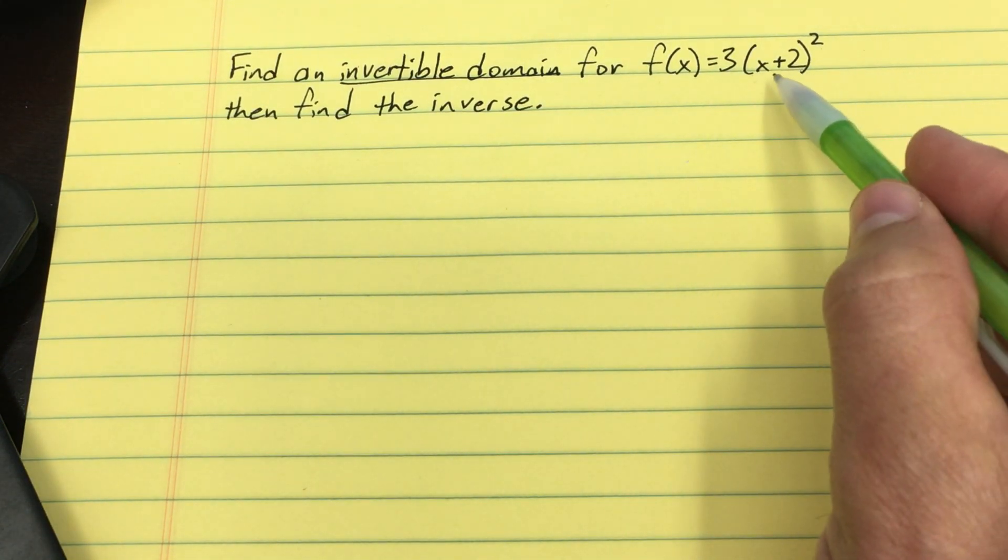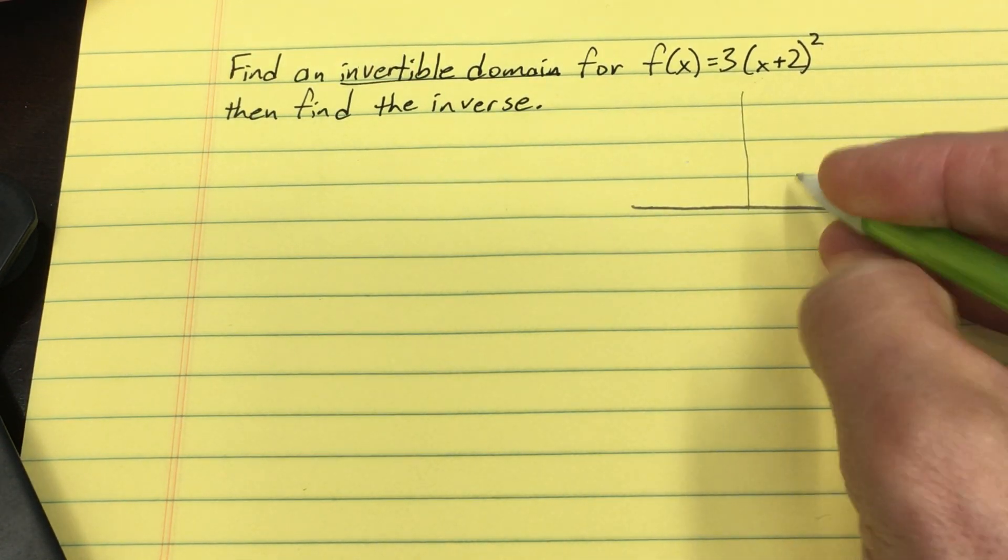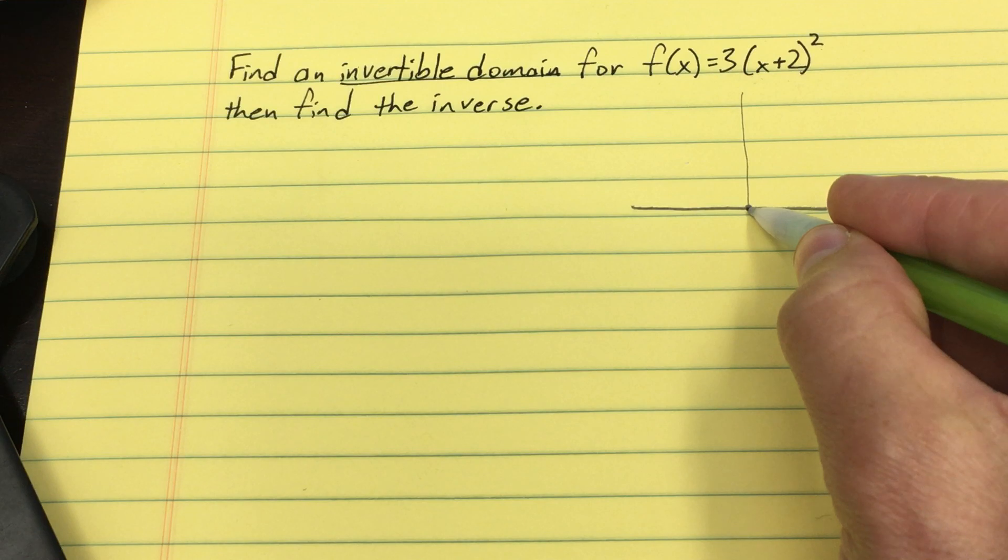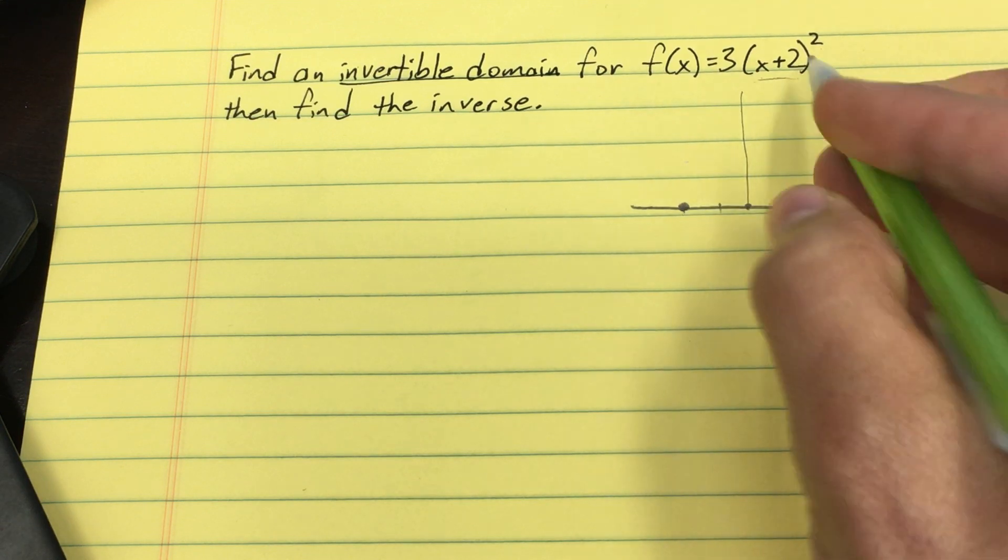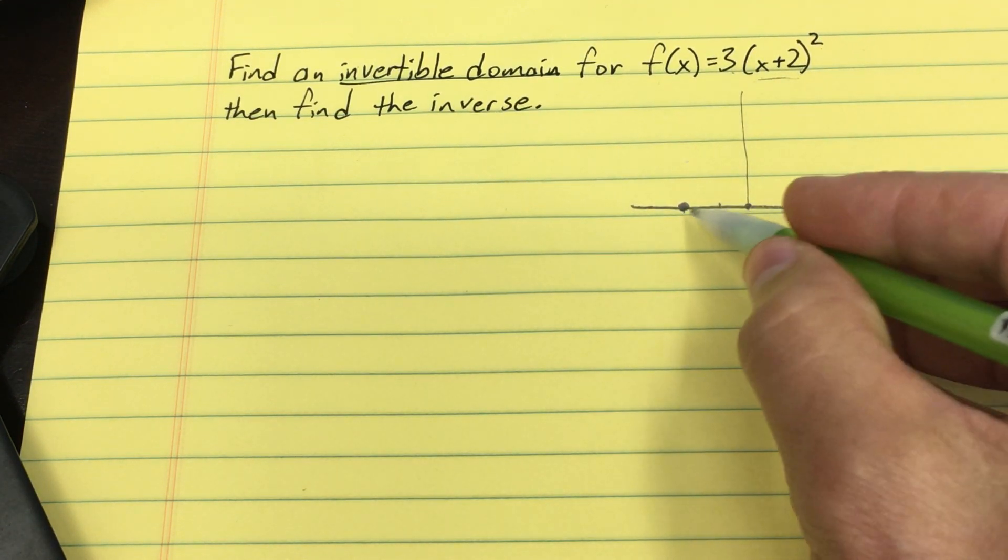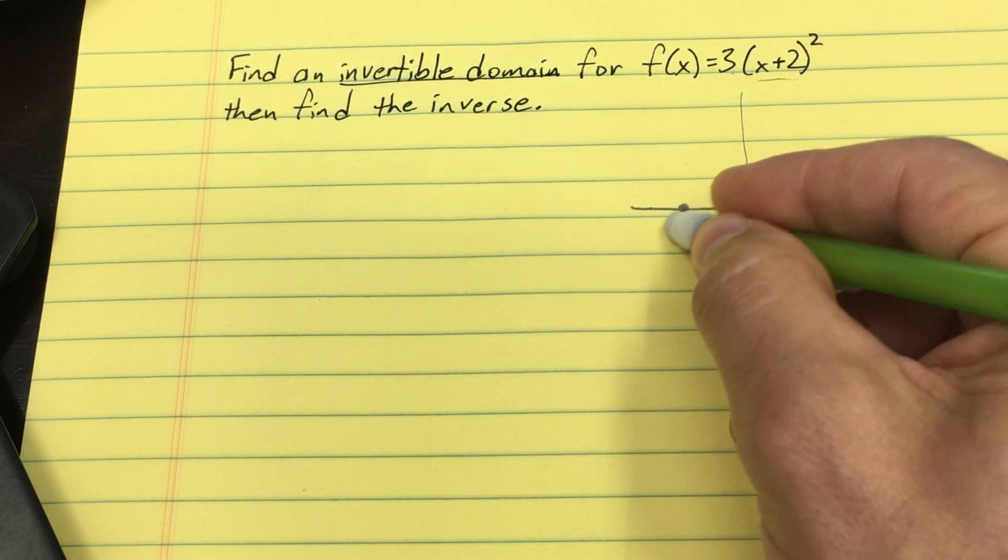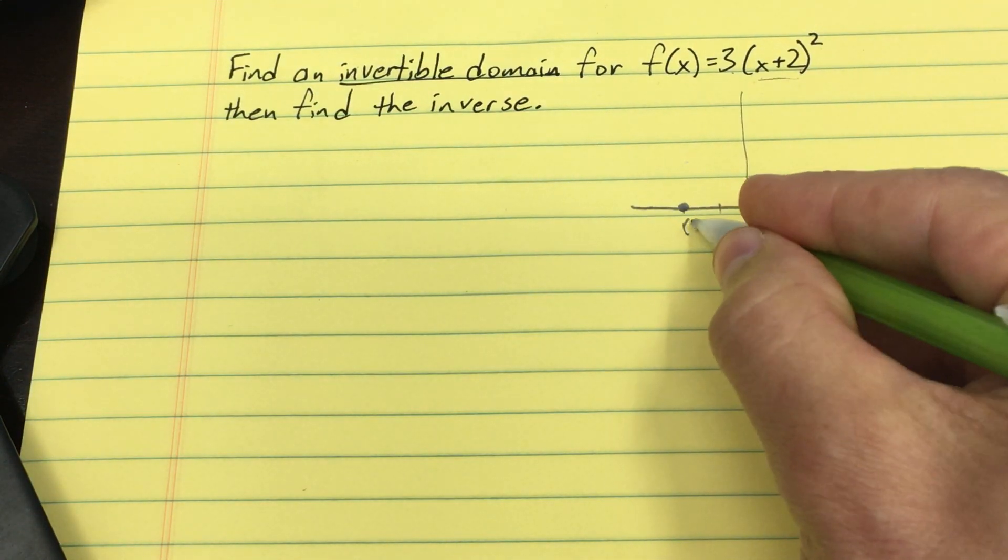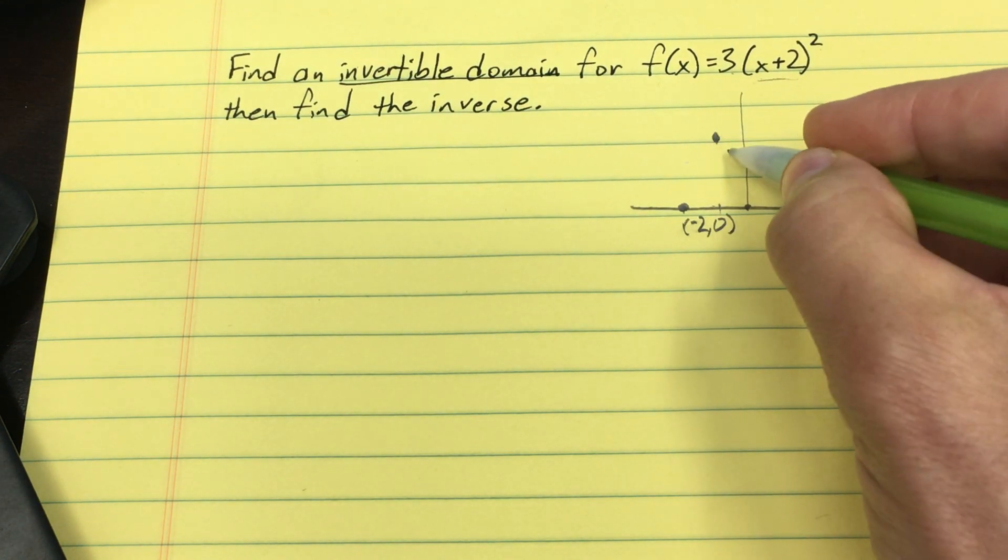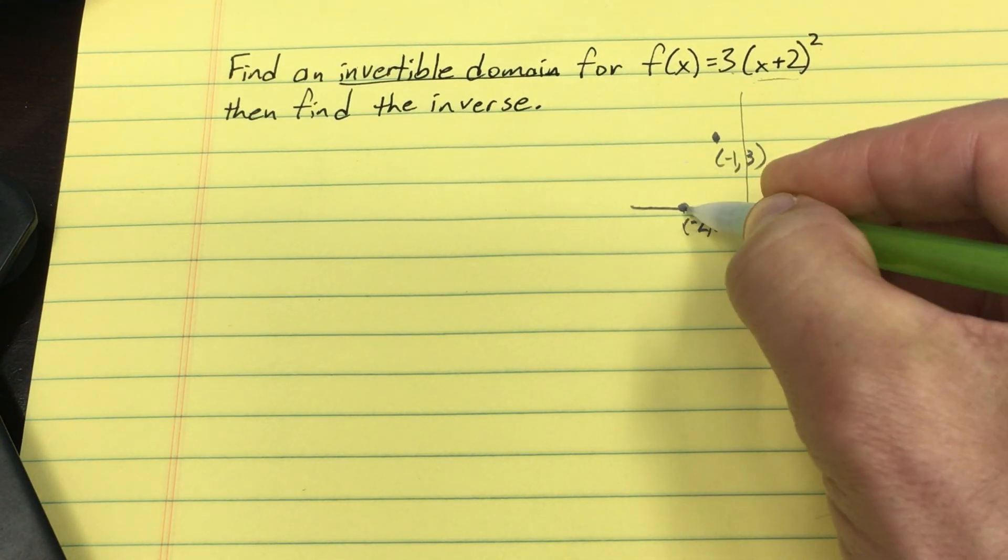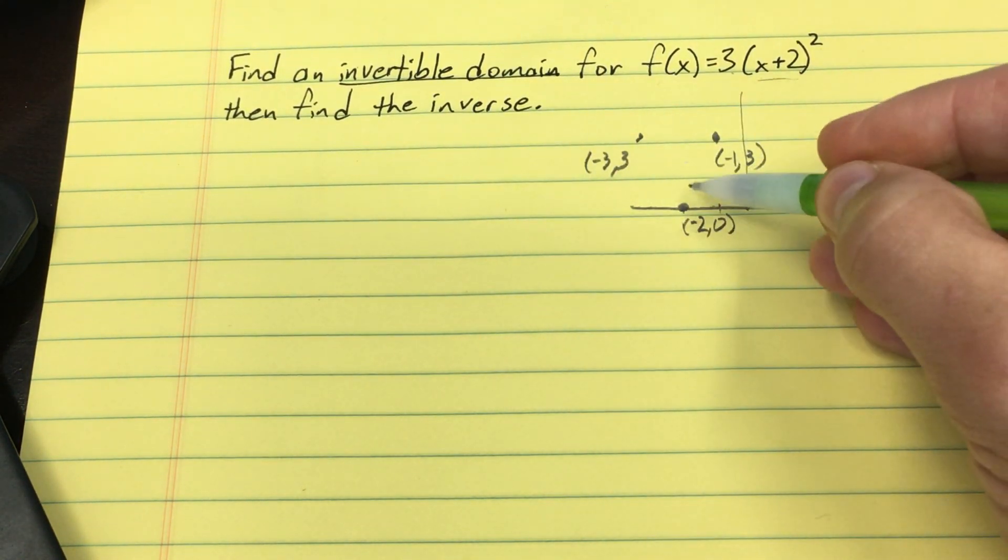Now perhaps you remember that these are transformations from the original parent quadratic that has its vertex (0,0). This would be a shift left to (-2,0), and this would be a vertical stretch by 3. Now something that has height 0 stays at 0, so this still goes through, let's see, (-2,0), but then it goes through the point (-1,3), also goes through the point (-3,3), and continues on.